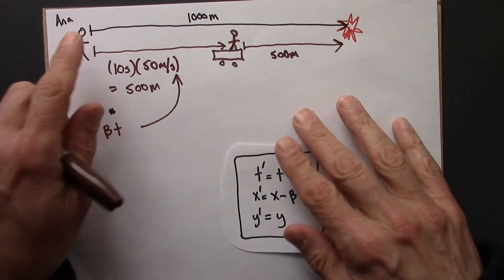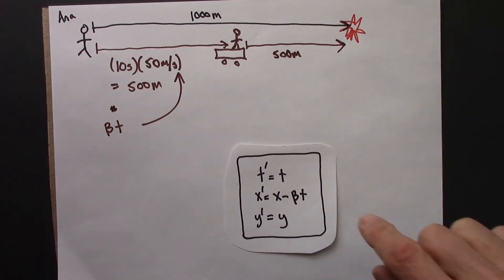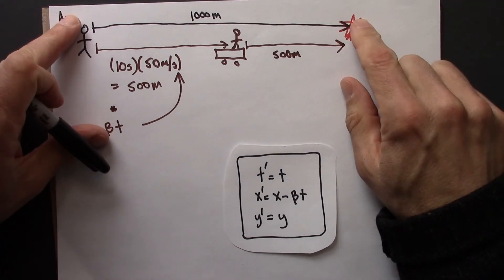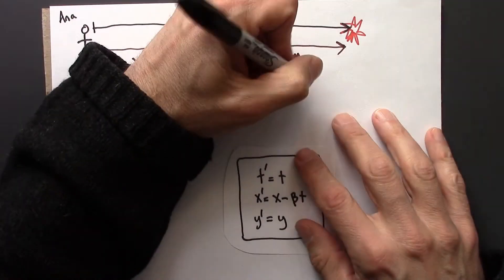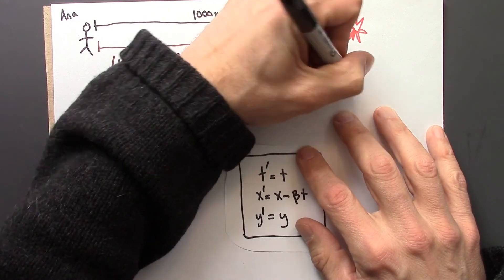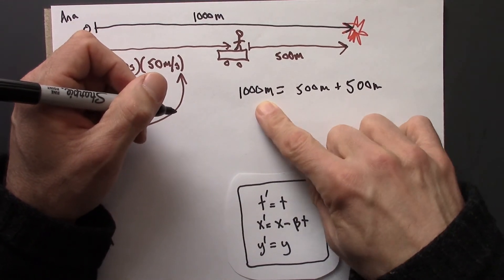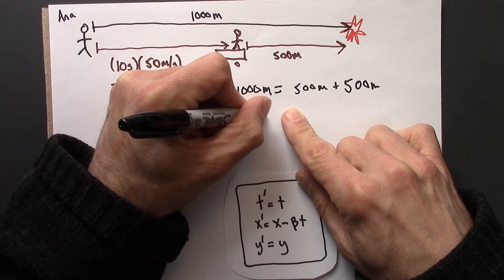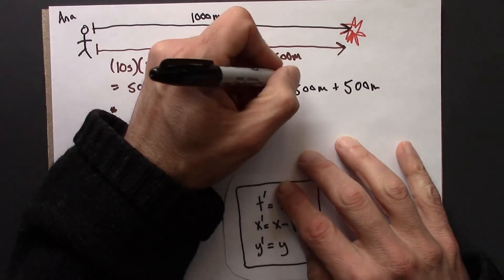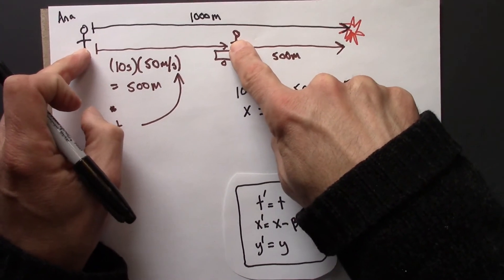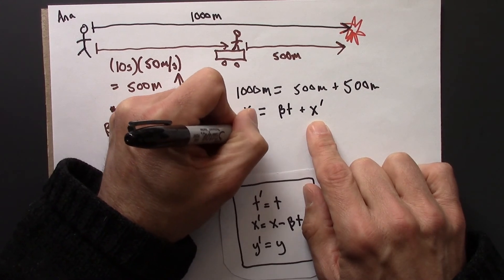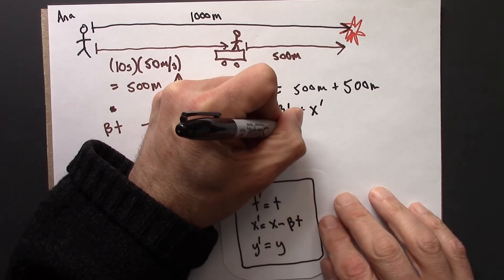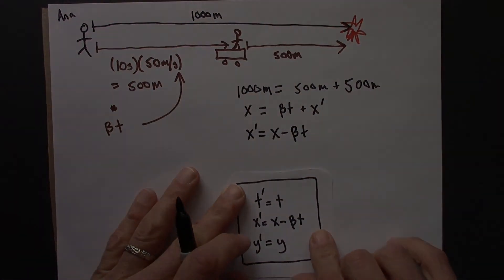And just to take these numbers and put them back into these symbols, what this is saying is, 1,000 meters is, okay, this plus this. That's not very deep. It's 500 plus 500. And this 1,000 meters, that's Anna's observation. This 500 meters is beta T, how far Beowulf travels. And this 500 meters is Beowulf's coordinate. And I could rewrite this like this to make it agree with that. So, hopefully this example makes this seem a little more concrete and understandable.